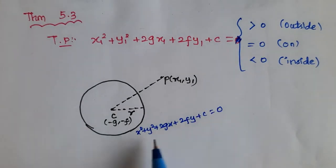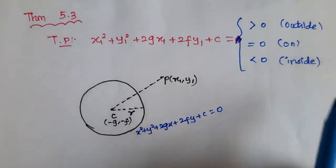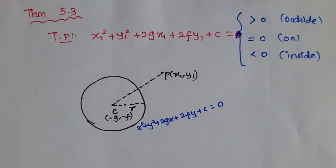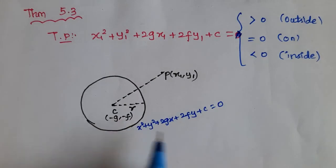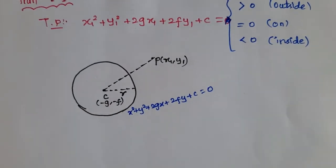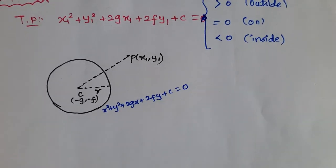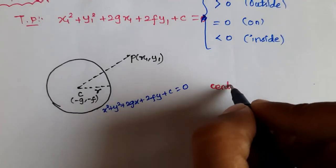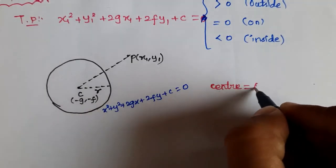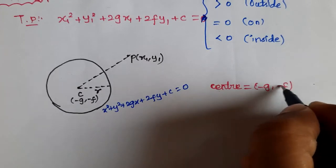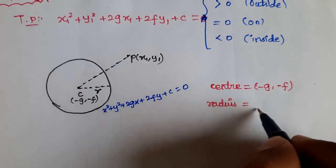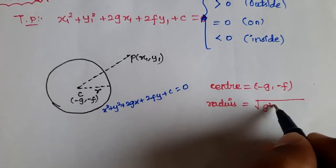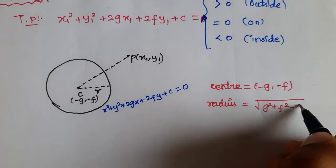For this circle, the center value is (−g, −f). The radius is equal to √(g² + f² − c). So the center is (−g, −f) and the radius r = √(g² + f² − c).